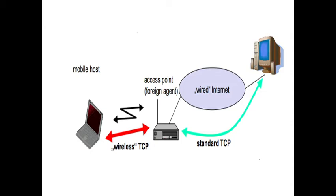The correspondent host will think the packet has reached its destination without any loss. So the foreign agent tries to retransmit the packet locally. After transmitting the packet to the mobile host, the foreign agent still keeps a copy. If packet loss is detected between the foreign agent and the mobile host, the foreign agent retransmits the packet, as it already gave acknowledgement to the fixed network, maintaining reliable data transport.